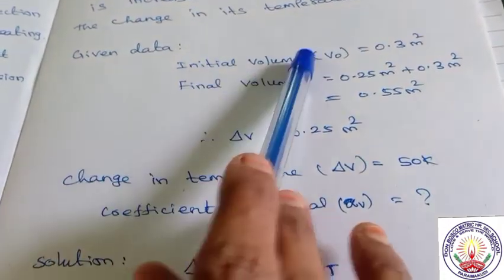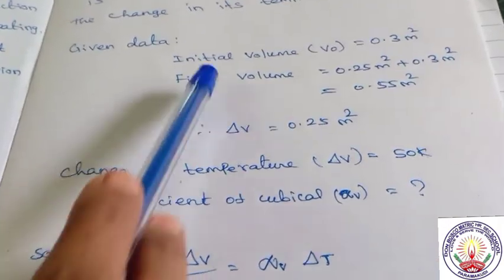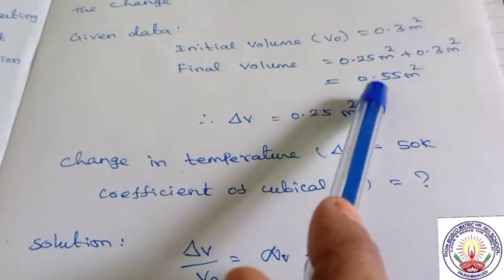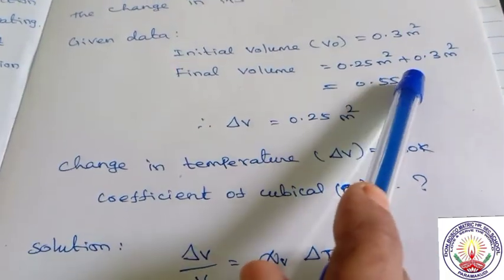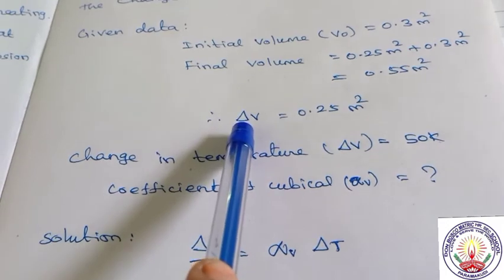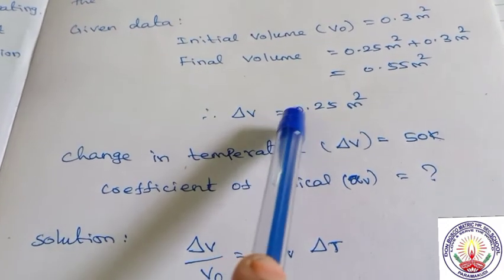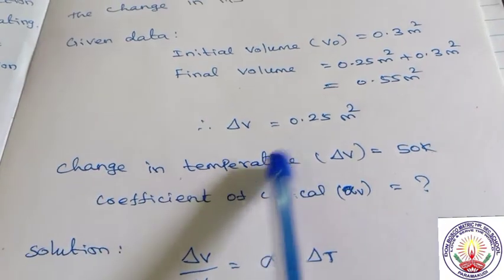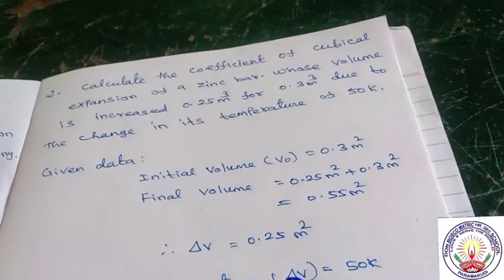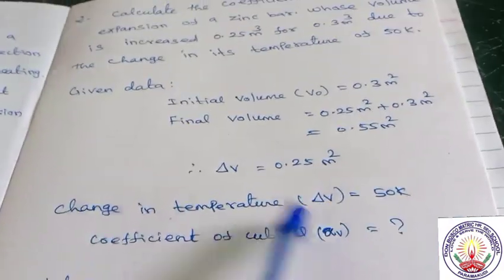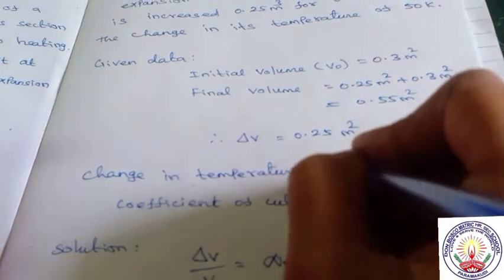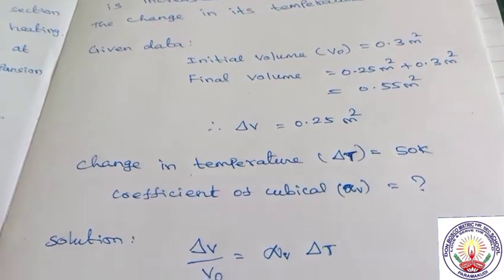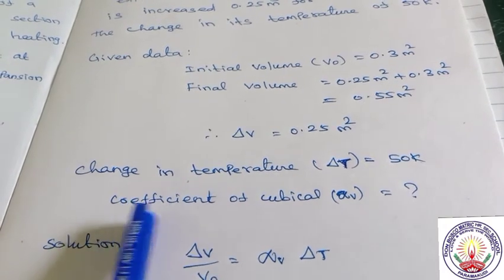Initial volume is 0.3 meter cube, final volume is 0.55 meter cube, so delta V equals 0.25 meter cube. Change in temperature delta T equals 50 Kelvin.